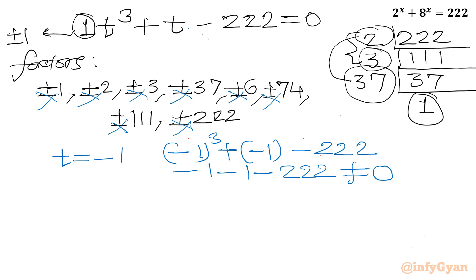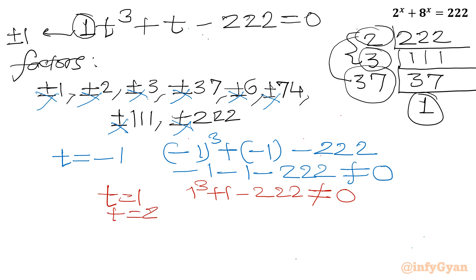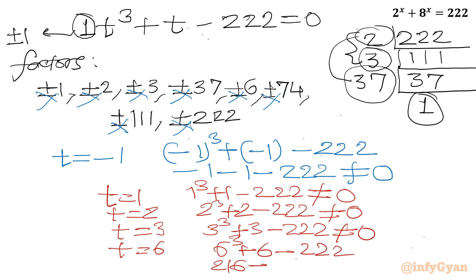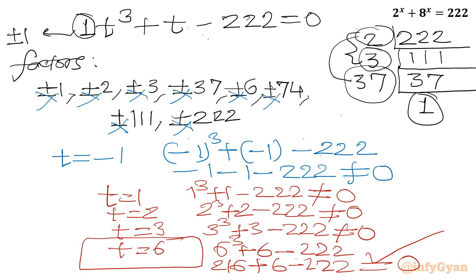Testing t = 1: 1³ + 1 − 222 ≠ 0. Testing t = 2: 2³ + 2 − 222 = 10 − 222 ≠ 0. Testing t = 6: 6³ + 6 − 222 = 216 + 6 − 222 = 0. Yes! So t = 6 is our first real solution to the cubic equation t³ + t − 222 = 0.